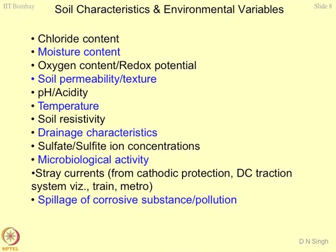Oxygen content and redox potential are also important. Soil permeability and texture — soil permeability depends upon the texture of the soil. pH and acidity: acidity is not good for human beings, and similarly it is not good for soils. Temperature: at very elevated temperatures the corrosion potential becomes much greater. Soil resistivity — the electrical resistivity or electrical conductivity — is a very important parameter in deciding the corrosion potential of the soil. Drainage characteristics are linked with soil permeability.